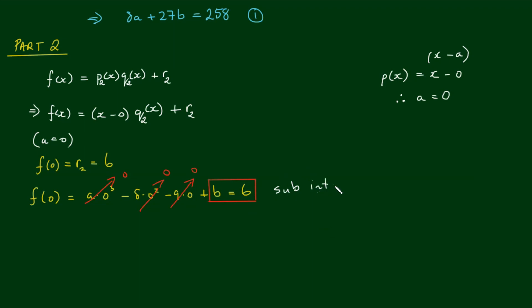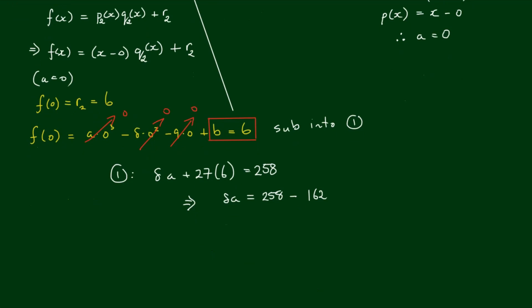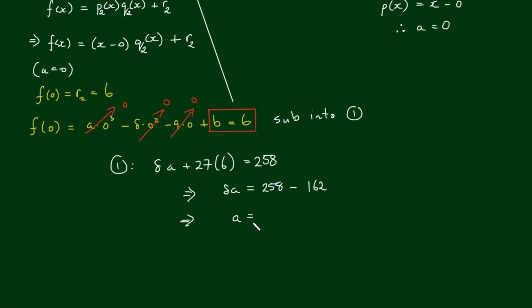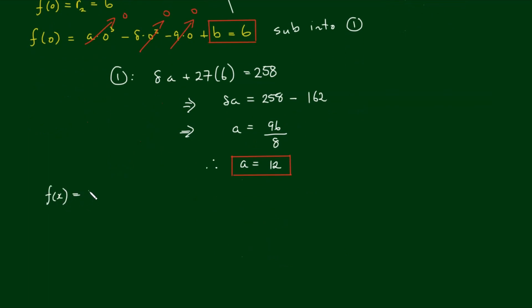And let's now sub this into equation 1. So from equation 1, we've got 8 times a plus 27 times 6 equals 258. So 8a is equal to 258 minus 27 by 6 is equal to 162. So 8a is equal to 258 minus 162 is equal to 96 divided by 8. So therefore, a is equal to 12. So there you have it. To complete it, we can simply write the expression that we're given f(x) as 12x cubed minus 8x squared minus 9x plus 6.